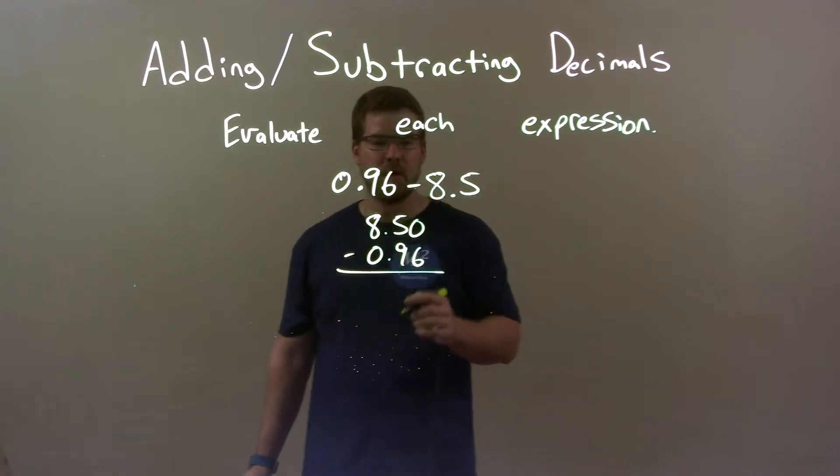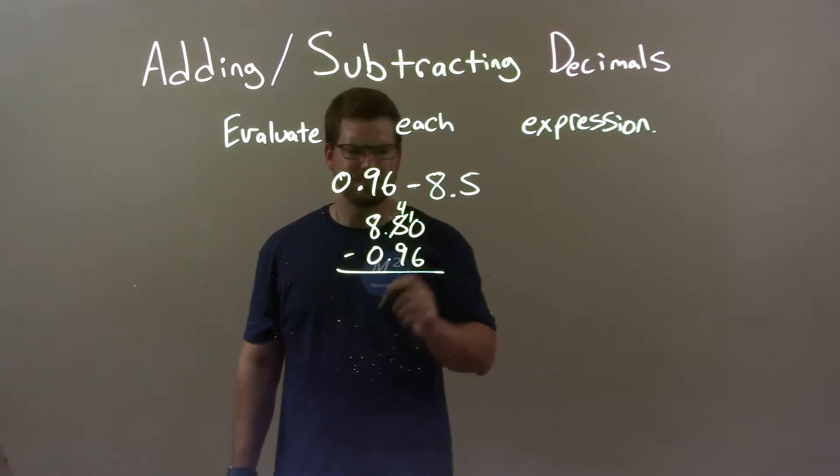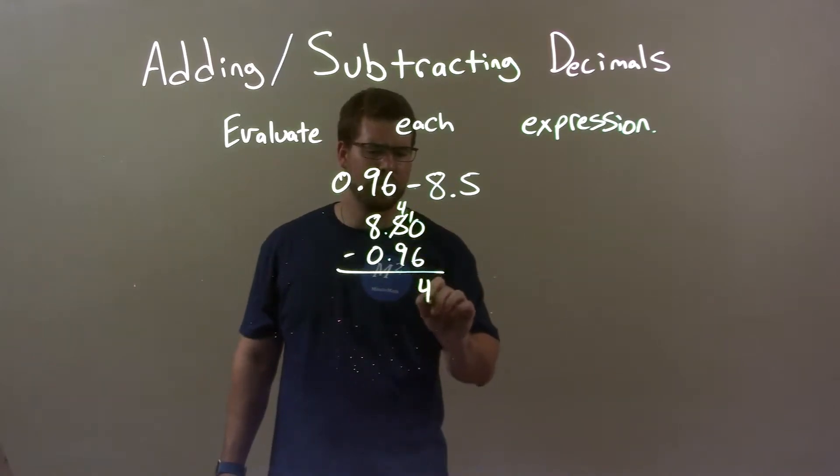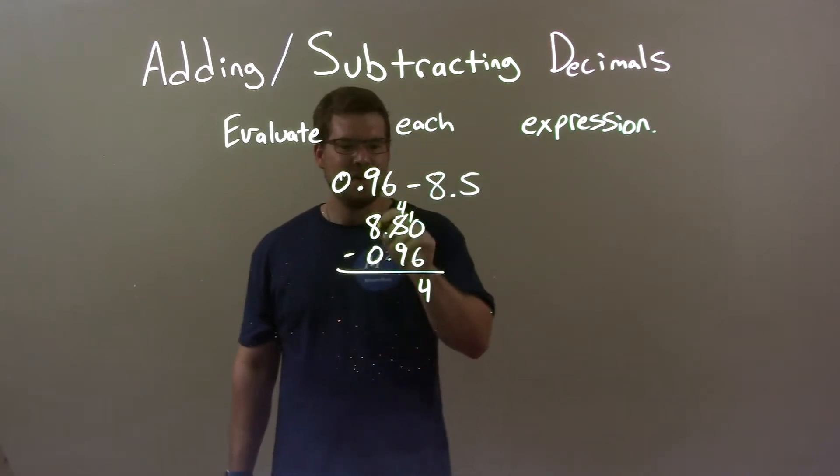Zero minus 6, cannot do that. 5 becomes a 4 and carry the 1. 10 minus 6 is 4, but 4 minus 9, you cannot do it, so we take 1 from the 8. That becomes a 7 and put a 1 on the 4.